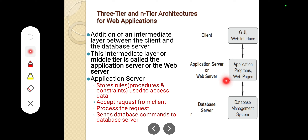The main processing and query processing is handled by the application server. In three-tier architecture, compared to two-tier, there is an intermediate layer between the client and the database server. This intermediate layer or middle tier is called the application server or the web server.